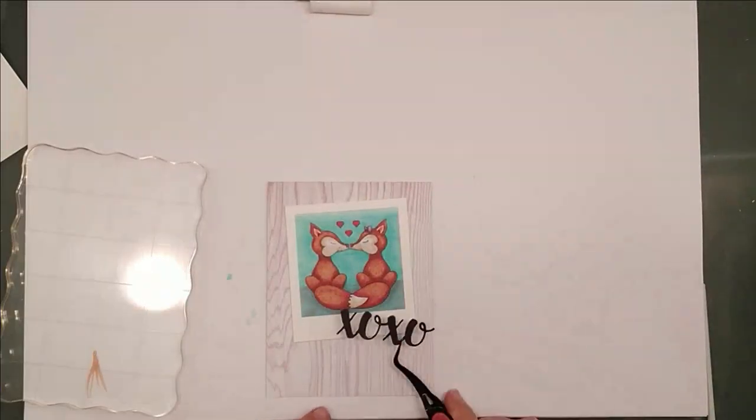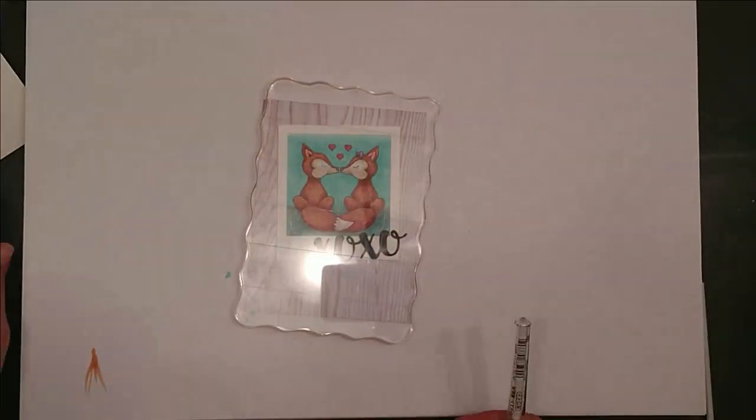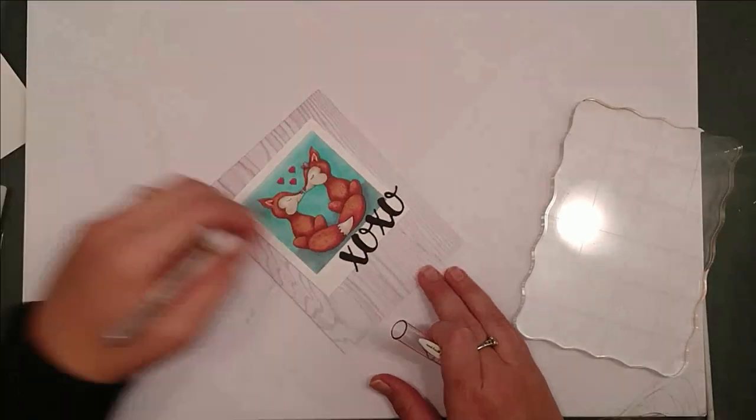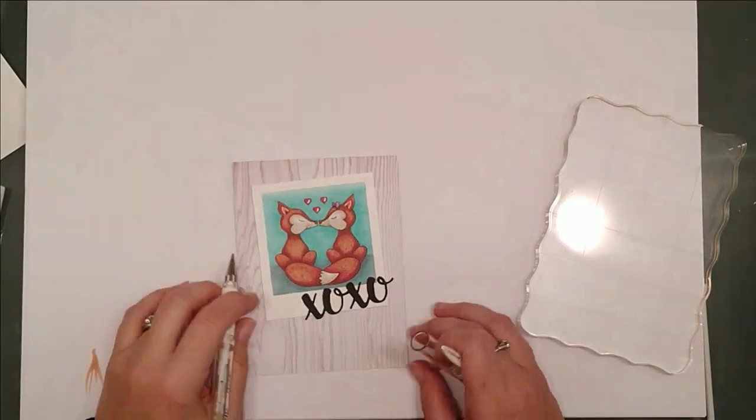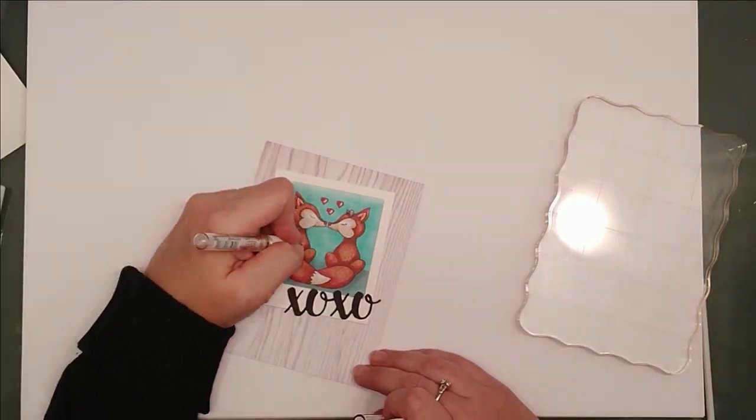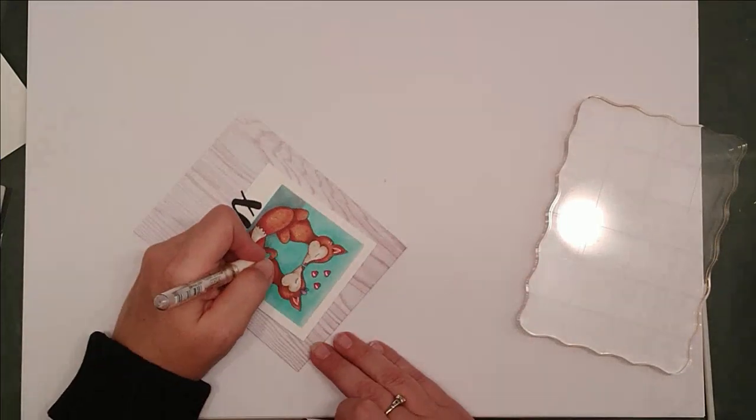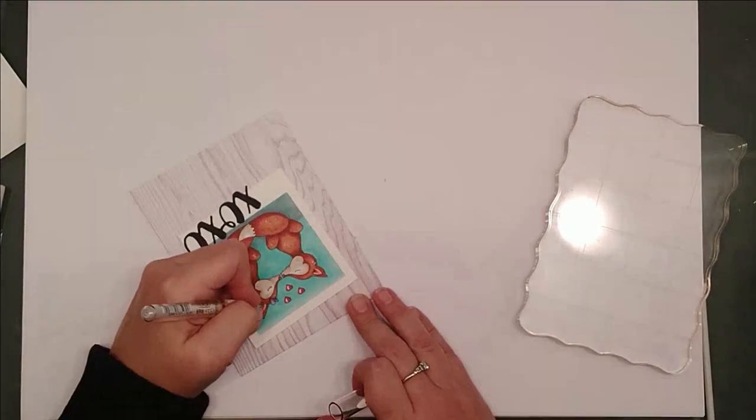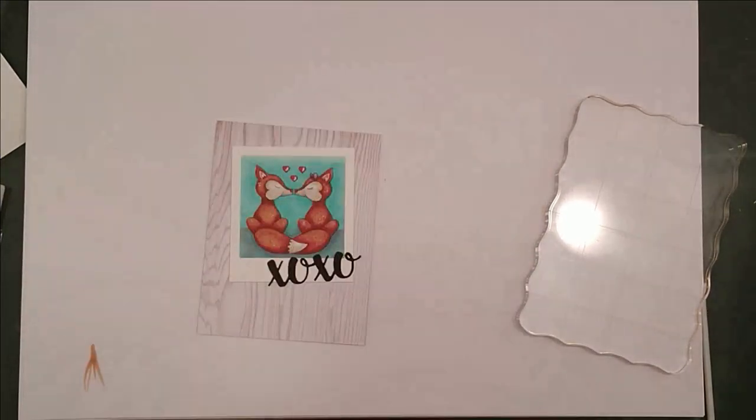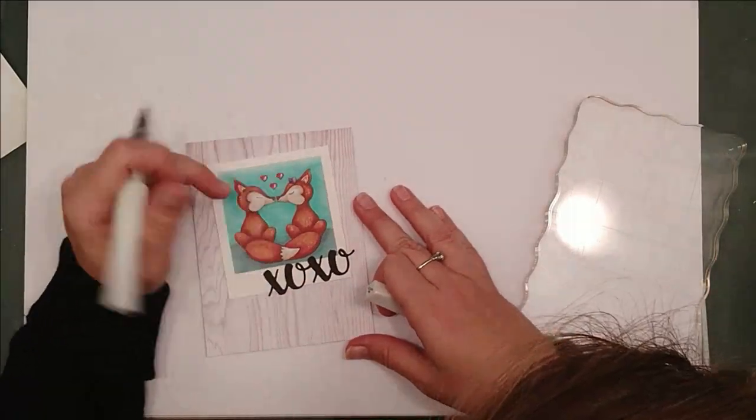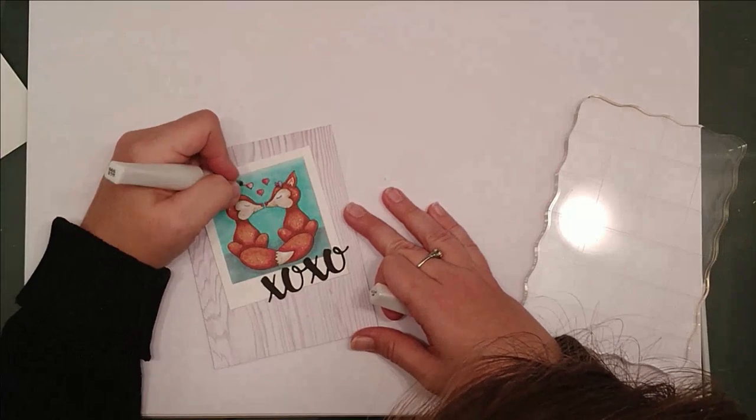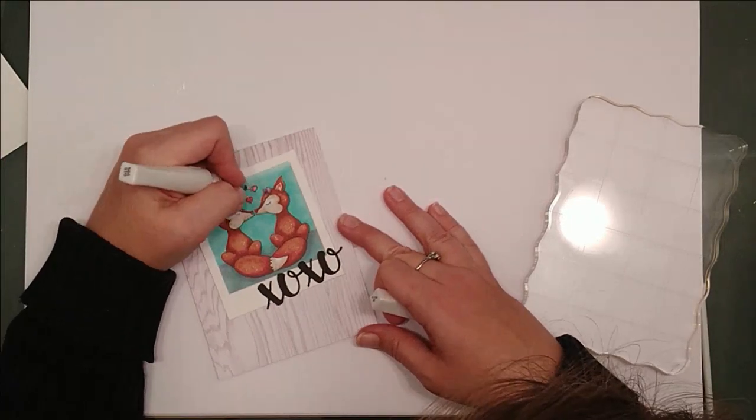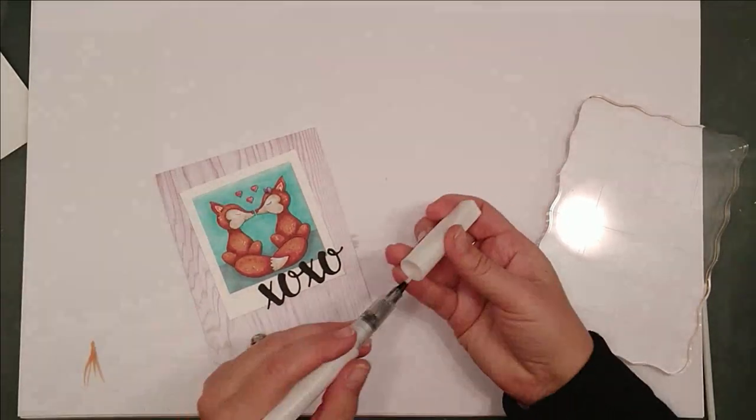You'll see me pull out a white gel pen here to add some details. A little more stippling to the foxes, and I add it to the hearts. But you'll notice in a second that I didn't let it dry and I pull out my Wink of Stella glitter pen just to highlight those hearts a little bit more. But since the gel pen wasn't dry it kind of brushed it all away. And I ended up liking it better with just the glitter. So happy accident, right?